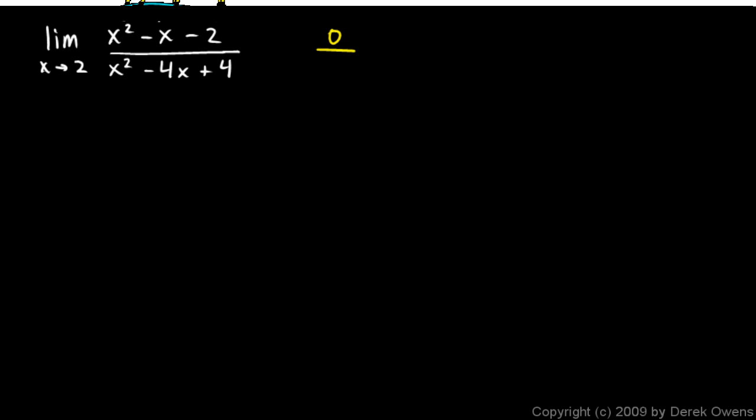That will be 0 over, and the denominator is going to be 4 - 8 + 4, which will be 0. So we need to try to simplify this.